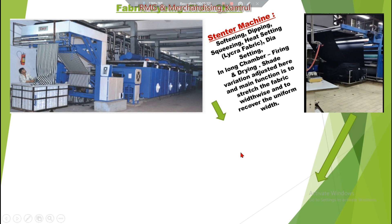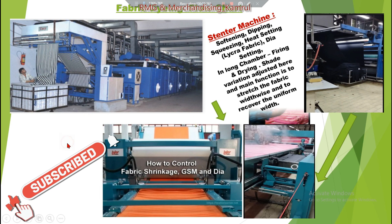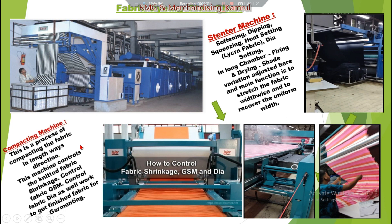After the stenter, the fabric is sent to the compacting section. Compacting is the process of compacting the fabric in the lengthwise direction — the stenter works width-wise but compacting works lengthwise. This machine controls fabric shrinkage and also the fabric GSM and diameter. Hot water is used here and the fabric is finished. After compacting, the fabric goes to the inspection section and is then delivered to the garment section for garment making.